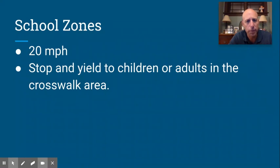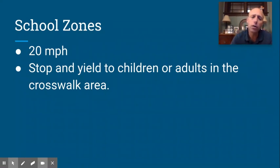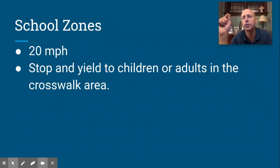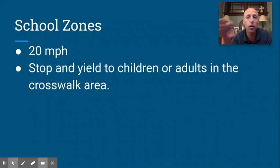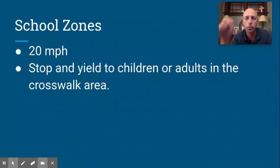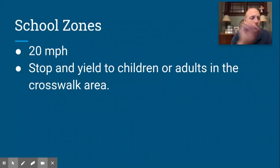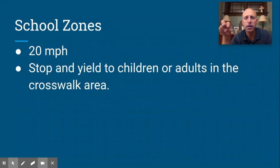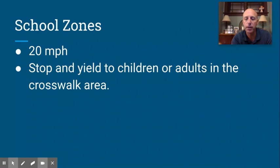School zones are 20 miles per hour. You are required to stop and yield to children and adults in the crosswalk area. If they're even getting close to the crosswalk, you have to stop and yield in a school zone. Pedestrians have the right of way in crosswalks whether it's a school zone or not, but in school zones especially, even if a pedestrian is just approaching the crosswalk area, you have to stop and let them go.